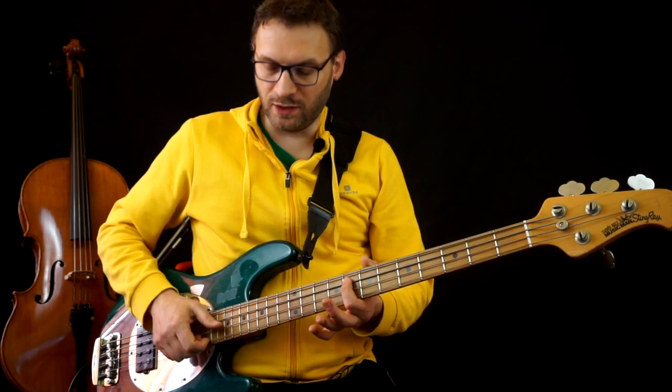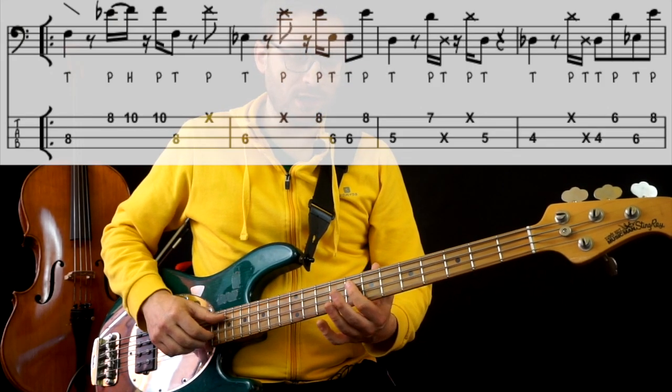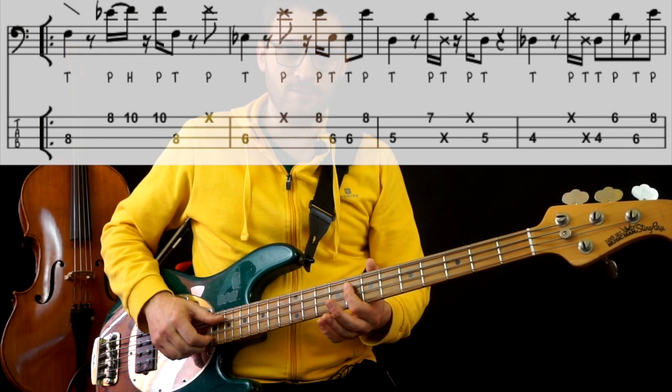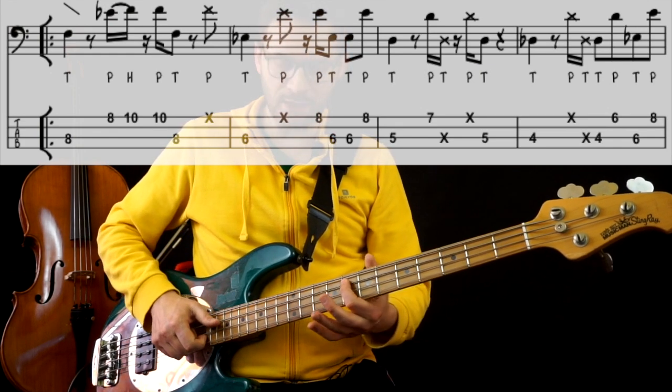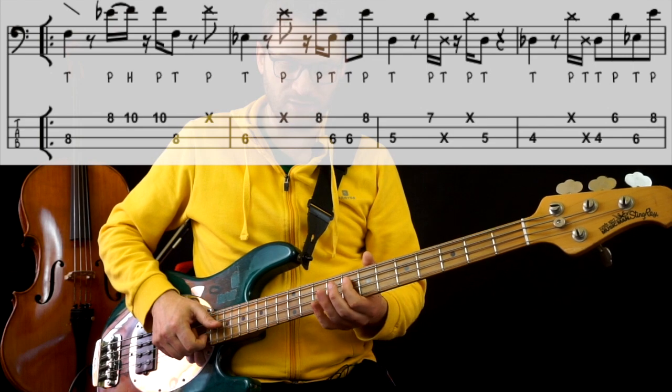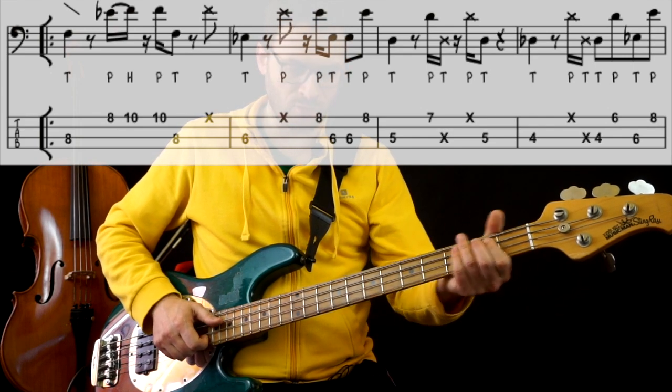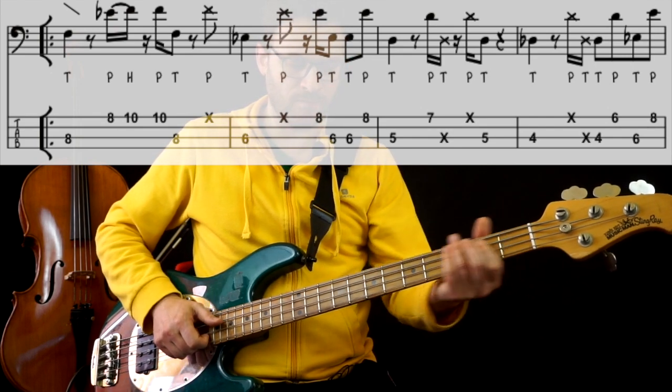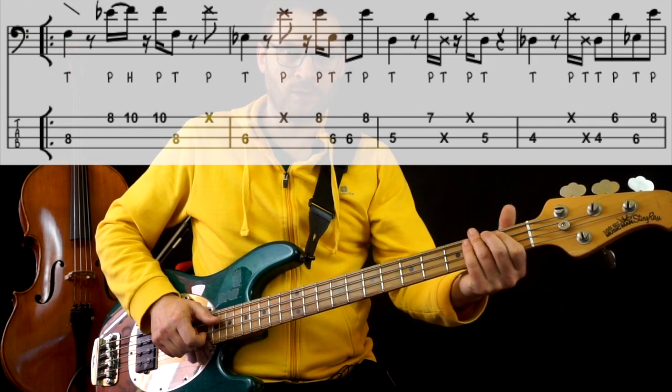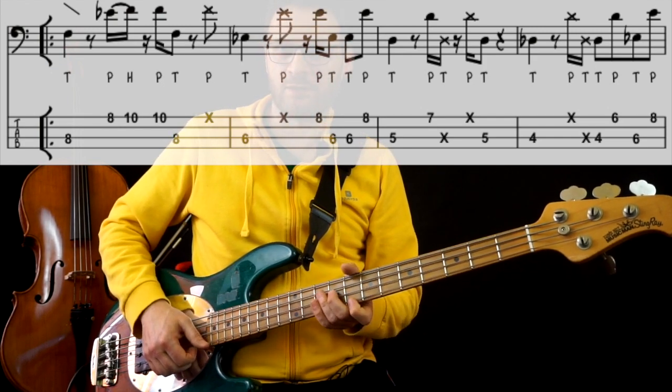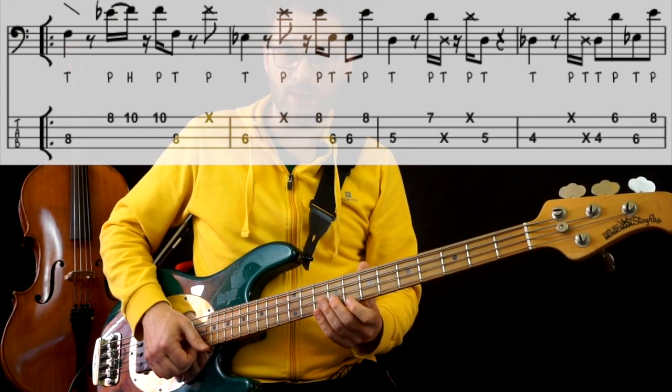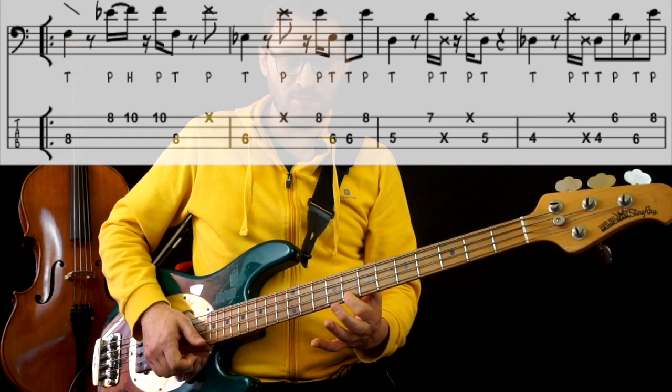This section starts with an F taken at fret 8 on the A string, with a thumb and then a downward slide. Then I take this pluck pattern, E♭, F,